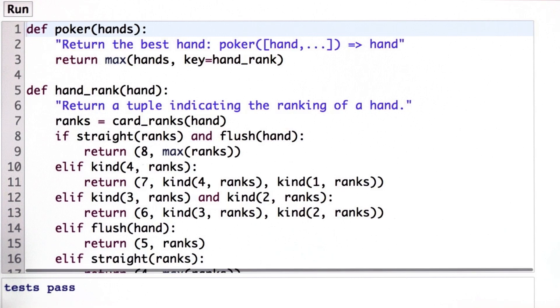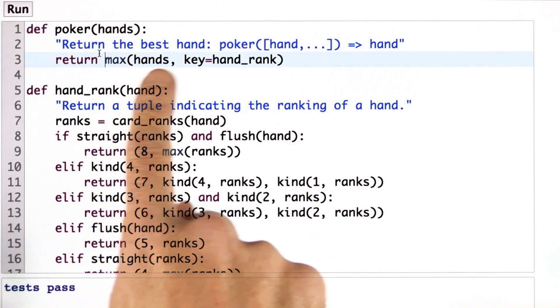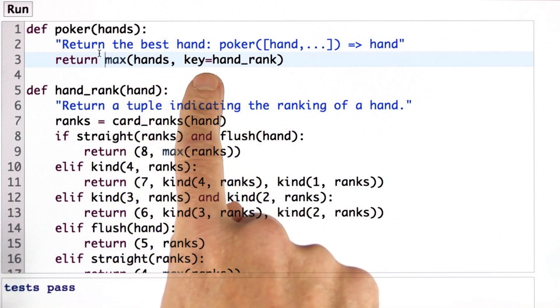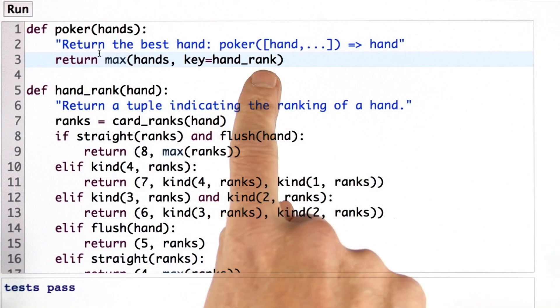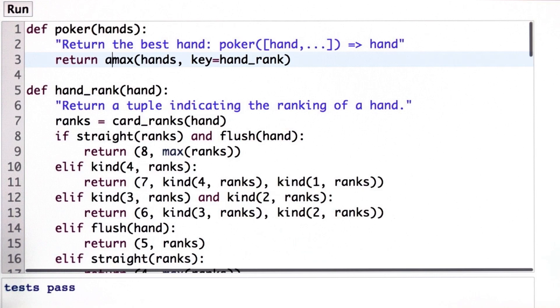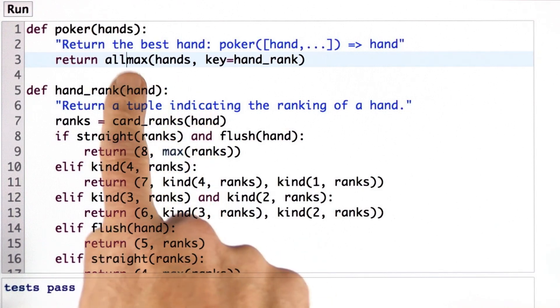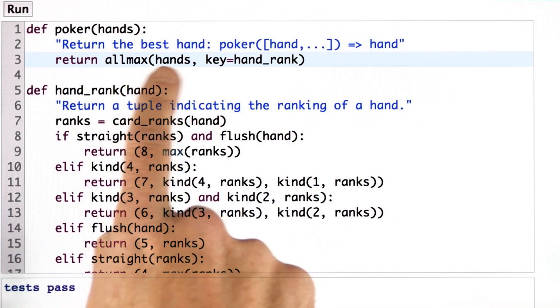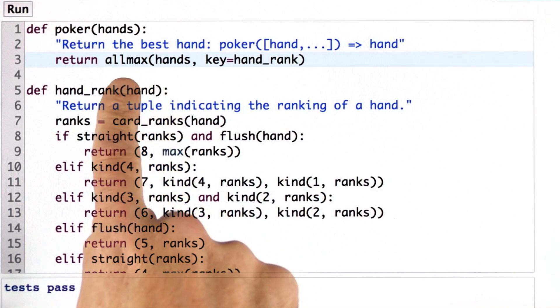Well, here's my suggestion for how to handle it. I'm just going to say we have the right idea here that we want to go through all the hands and we want to compare them using hand rank. But instead of returning the one maximum, let's invent a new function called all max that returns a collection, it could be a set or a list of all the maximums.